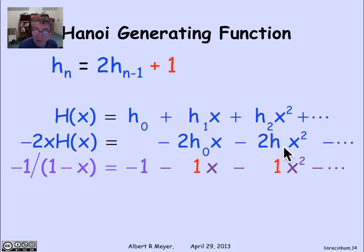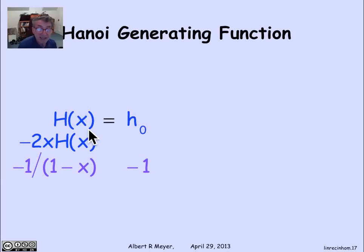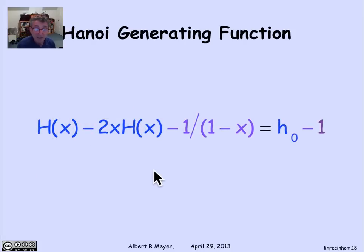And the result is that if I add them up now, all of the columns to the right of the first one sum to 0. And they can be erased because they're really not there. So let's clean up this sum. And what I get is that all the stuff on the right disappears. And there's this one equality h of x minus 2h of x minus 1 over 1 minus x is equal to h0 minus 1. So let's tidy that up. There it is. h of x minus 2h of x minus 1 over x is h0 minus 1.